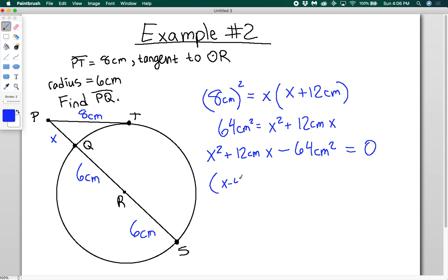I can factor this into X minus 4 centimeters times X plus 16 centimeters equals zero. And then X is equal to 4 centimeters, or X equals negative 16 centimeters. This obviously doesn't make sense, so this is the answer that we want. PQ equals 4 centimeters.